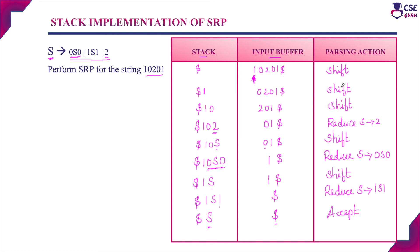In the shift reduce parsing technique, the parser implements two operations continuously: shift and reduce. Whenever there is no proper handle at the top of the stack, the parser will shift the next element from the input buffer into the stack. Whenever a proper handle appears on the top of the stack, the parser will implement the reduce operation and the handle will be reduced. This process continues until the top element of the stack is the start symbol of the grammar and the input buffer is empty. When the stack reaches this condition, we can accept the given input string; otherwise the parser will raise an error. This is the procedure to implement the shift reduce parsing technique.